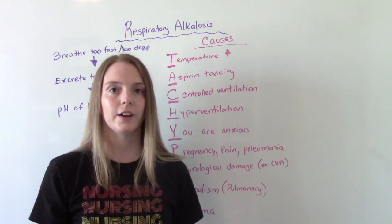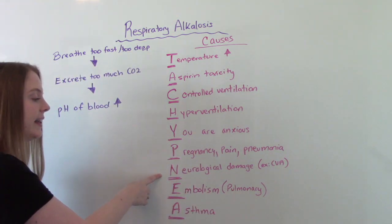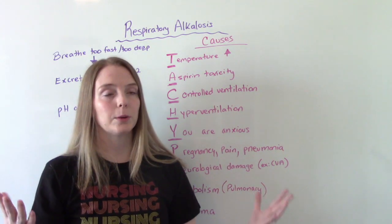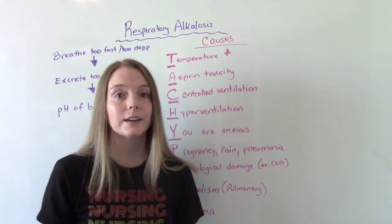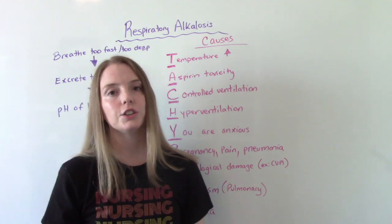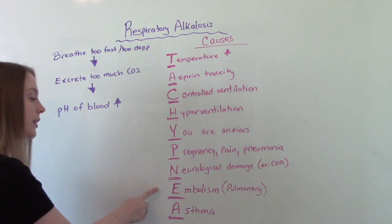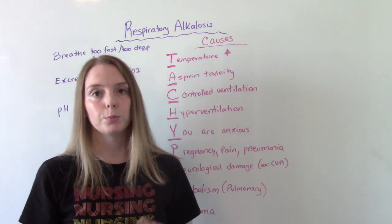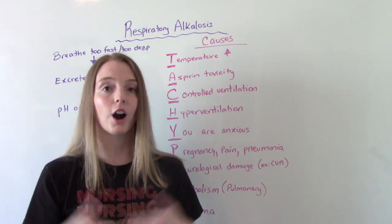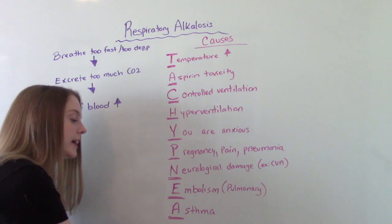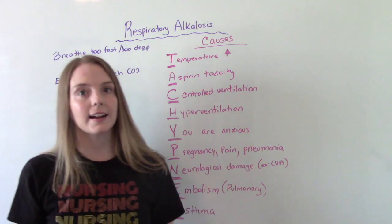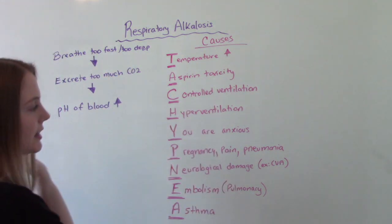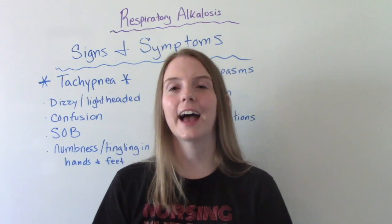Also under P is pneumonia — those patients have a harder time taking deep breaths and tend to hyperventilate. N is for neurological damage, such as a stroke, where damage to the respiratory center of the brain can cause increased respirations and hyperventilation. E is for embolism — specifically pulmonary embolism, a blood clot that's broken free and gone to the lungs, making it hard to breathe. The last letter A is for asthma — a patient having an asthma attack will be hyperventilating.